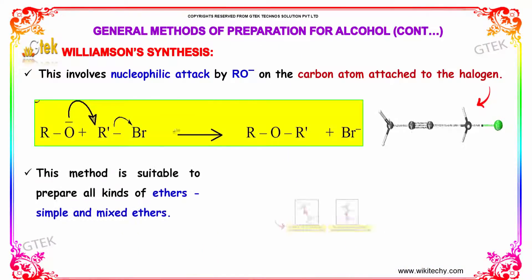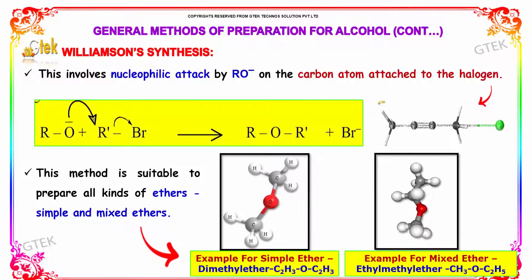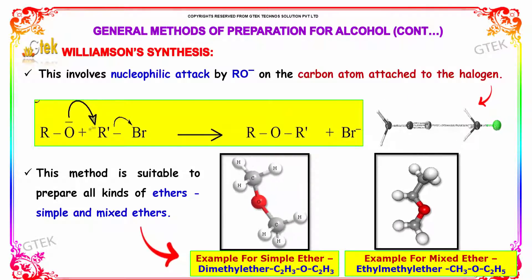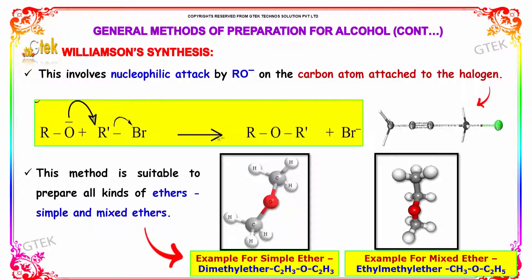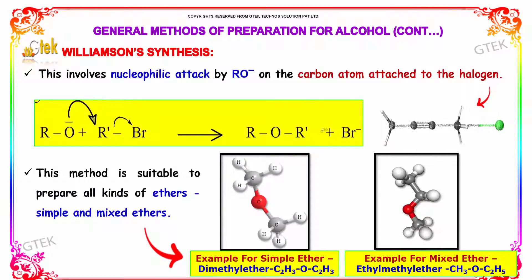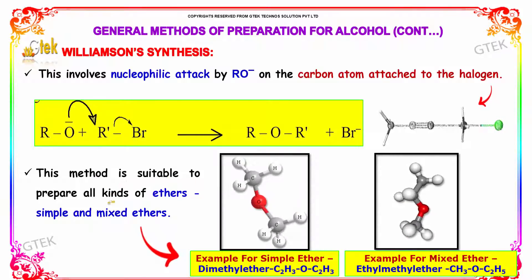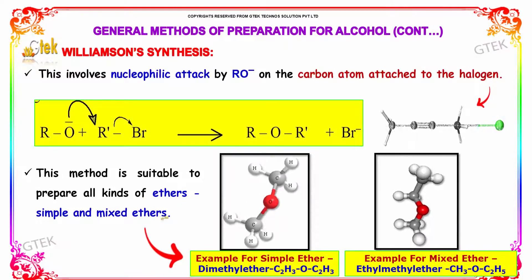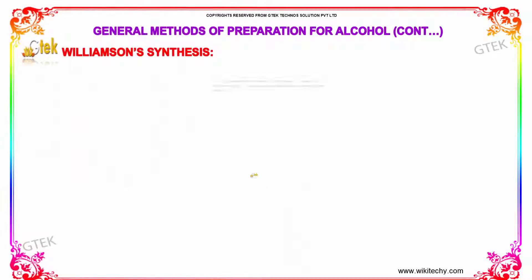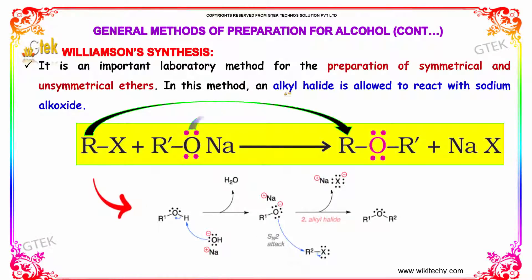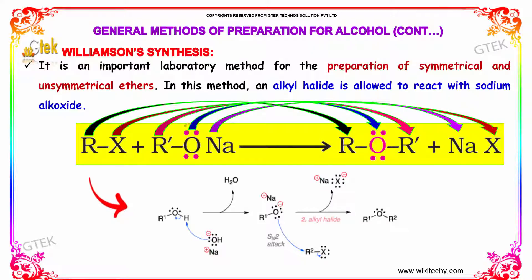This involves nucleophilic attack by RO⁻ on the carbon atom attached to the halogen. The O⁻ ion attacks RBr to form ROR' plus Br⁻; the oxygen atom replaces the bromine atom, thus ethers are formed. This method is suitable to prepare all kinds of ethers — simple and mixed. In this method, an alkyl halide reacts with sodium alkoxide: RX reacts with R'ONa to form ROR' (an ether) plus NaX, where X can be any halide.